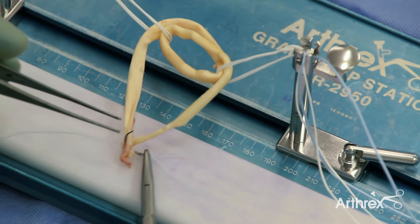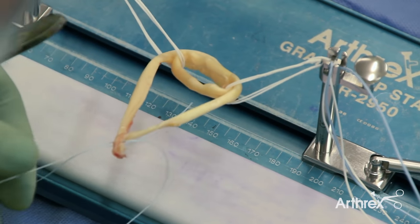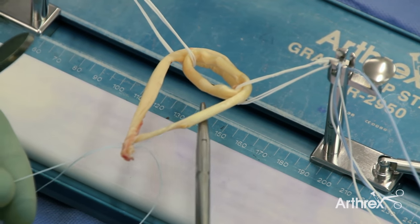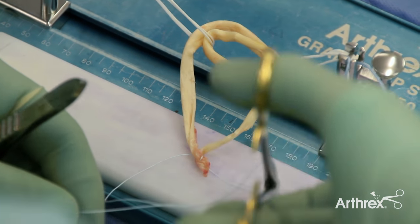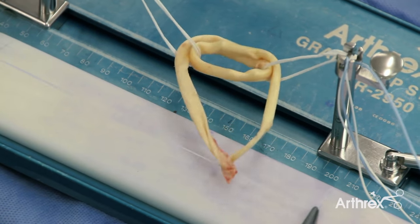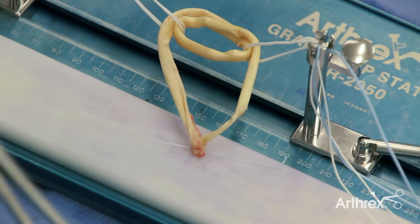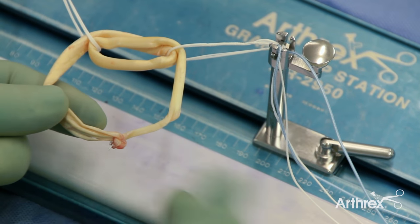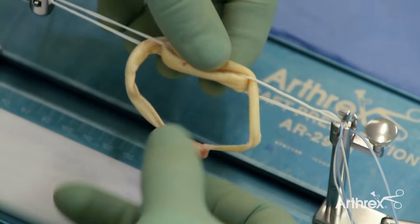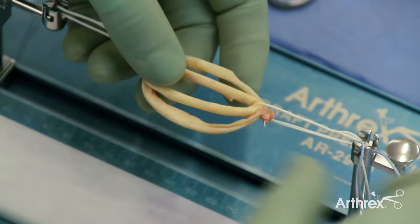These two free ends are then sutured together with a mattress suture using zero fiber wire. In isolation, the pullout strength of this knot is not great, but once it's been incorporated into the graft link, we've tested the pullout strength and the construct fails at approximately 80 newtons. This means that the graft can be manipulated and gentle tensioning carried out without concern the knot will fail.